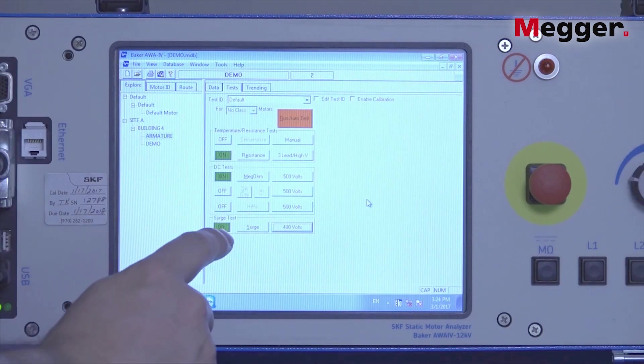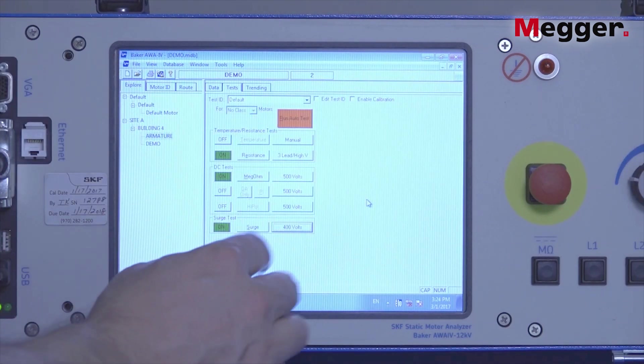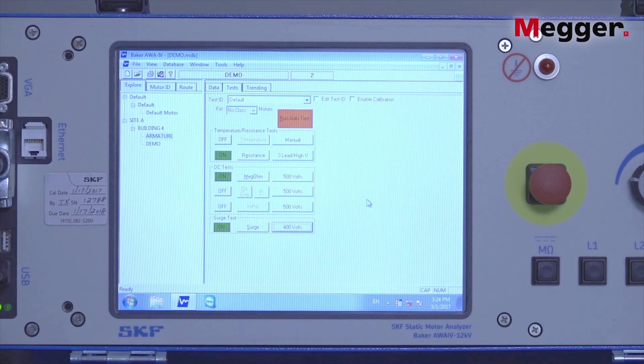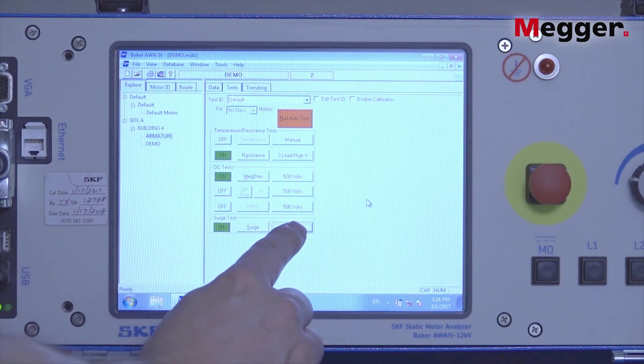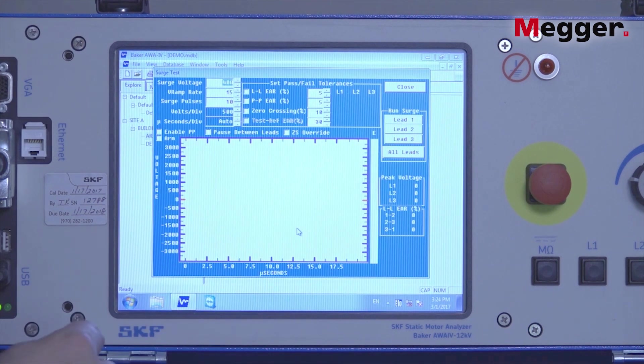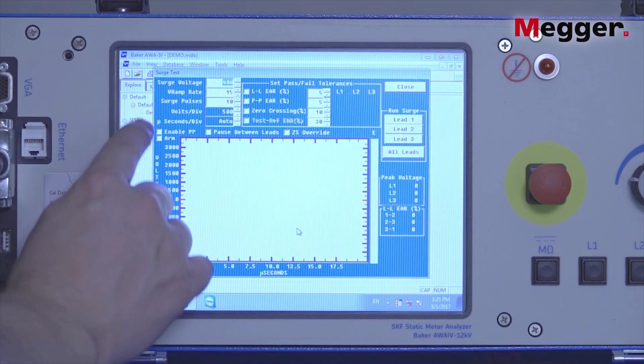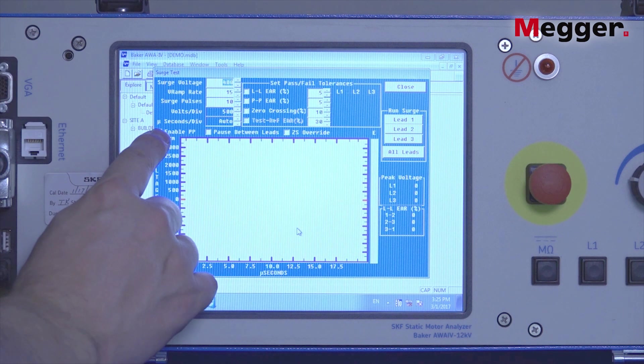We'll be conducting an armature bar-to-bar surge test with the ZTX accessory. Select the surge test setup button, then select the armature test feature, checking that box.